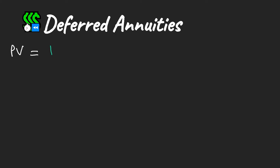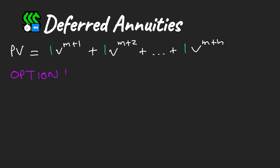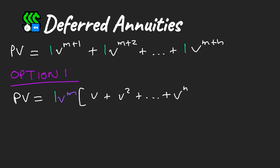We write out the present value by discounting from period m+1 through m+n. Option one: we remove the common factor of v^m, and we're left with a series of cash flows paid in arrears — a familiar annuity. This gives us new notation: the discount factor v^m times our normal annuity, where the exponent m represents the deferment period.